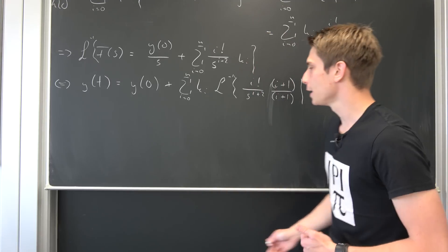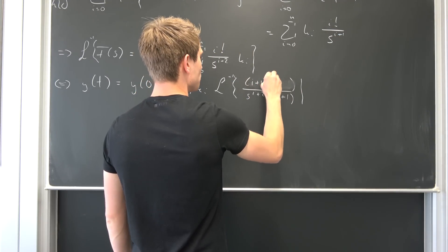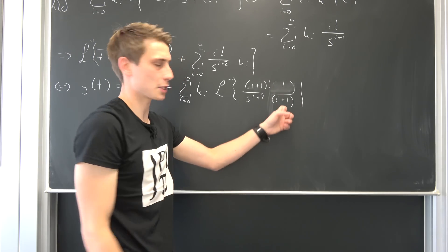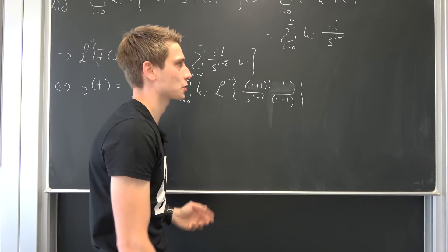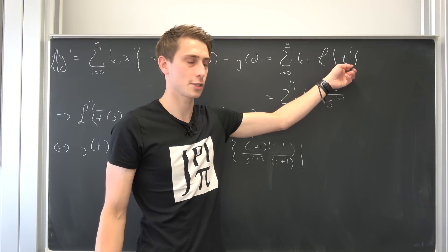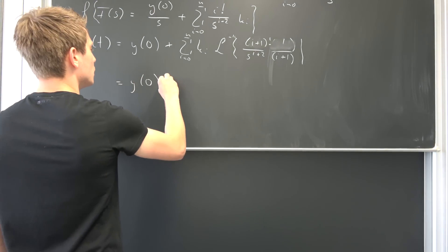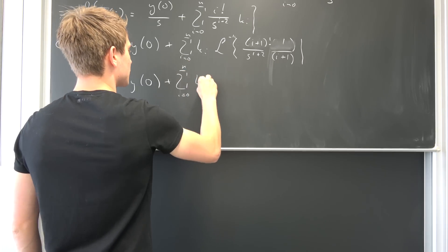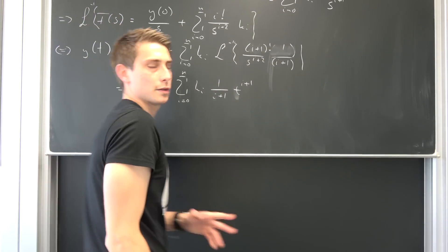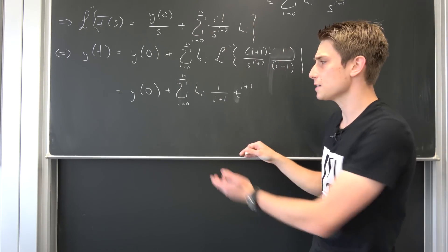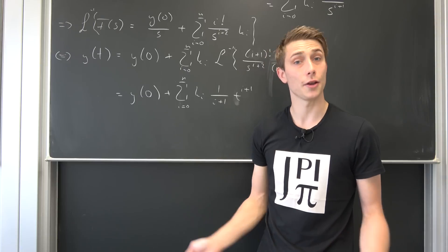So this is y(0) plus the sum from i equals 0 to n of k_i times (1 over i+1) times t to the i+1. This is exactly what we derived before using direct integration — the same result, with y(0) as the arbitrary constant. And now for the last method.